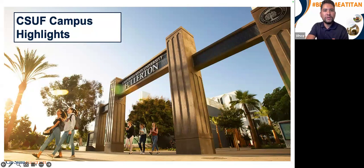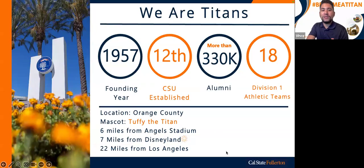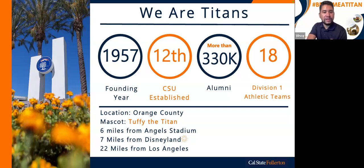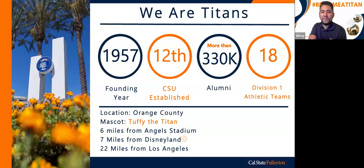Now for Cal State Fullerton highlights. We are the Titans, founded in 1957 as the 12th campus in the CSU system. We have over 330,000 alumni, 18 Division I athletic teams, and we're located in Orange County — seven miles from Disneyland, six miles from Angel Stadium, and 22 miles from Los Angeles. Our mascot is Tuffy the Titan, an elephant you'll see at campus events.